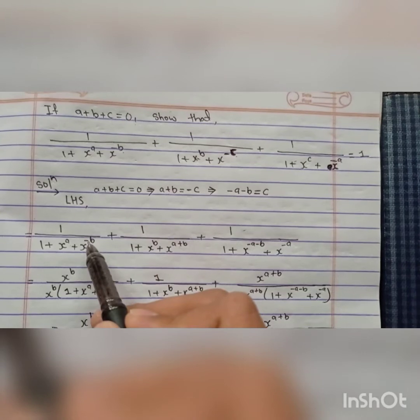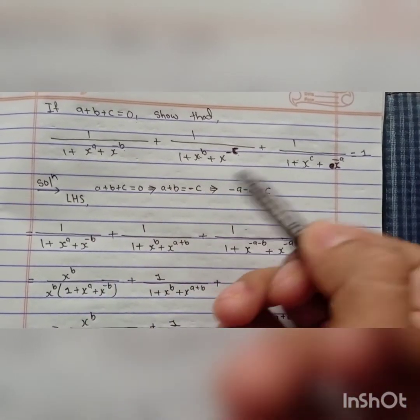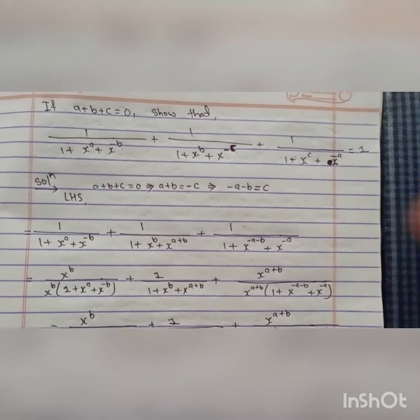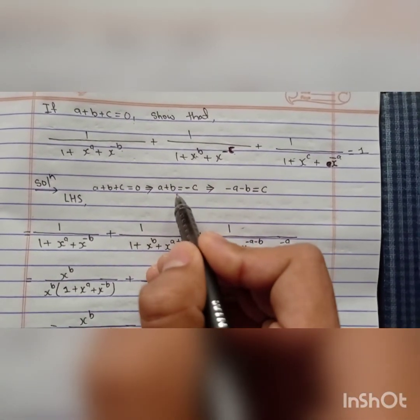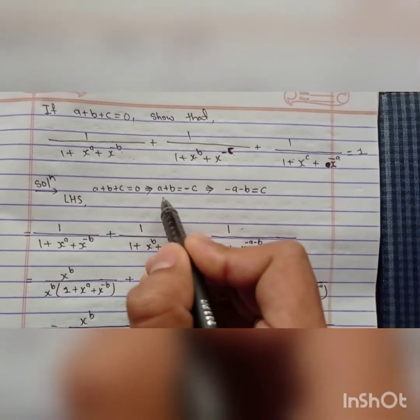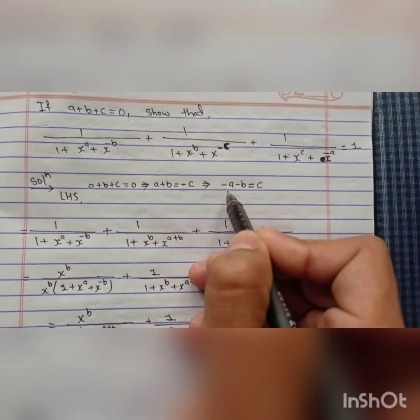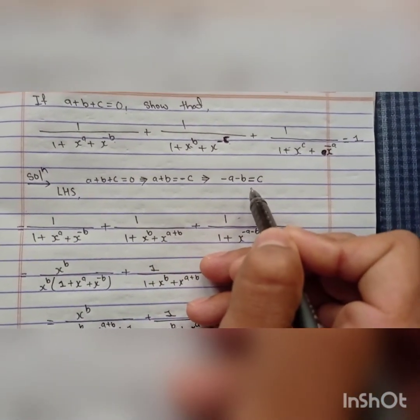Wherever you find c, you have to change it into the terms of a and b. So here I have isolated c. If we isolate c, we can get a plus b, and it can also be written as minus a minus b equals c.